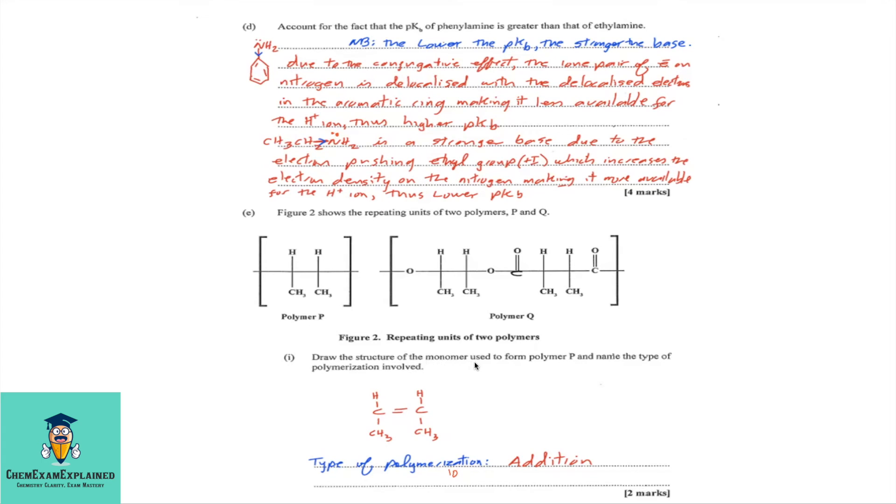Draw the structures of the monomer used to form polymer P and name the type of polymerization involved. So, if you have a polymer that is an addition polymer, and they ask you to draw the monomer, all you have to do is find the repeating unit and add a double bond. And this is the structure for your answer. And the type of polymerization is addition polymerization.